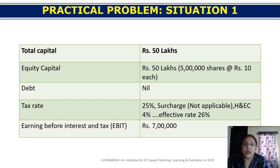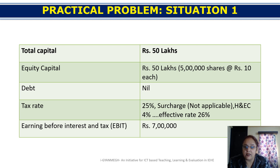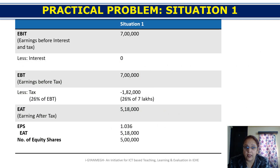Let us understand the practical problem. Situation 1: Total capital is 50 lakhs, divided into 5 lakh equity shares at the rate of Rs. 10 each. Tax rate is 25%, with health and education cess of 4%, giving an effective tax rate of 26%. EBIT is 7 lakhs. Since no debentures are issued, there is no interest deduction. Tax at 26% on 7 lakhs is Rs. 1,82,000. Earnings after tax is Rs. 5,18,000. Dividing by 5 lakh shares, earnings per share (EPS) is Rs. 1.036.